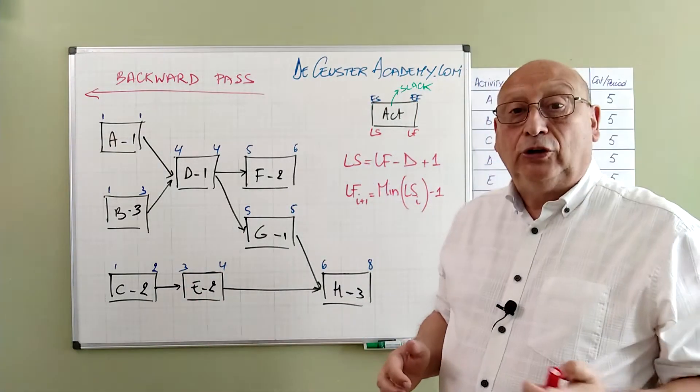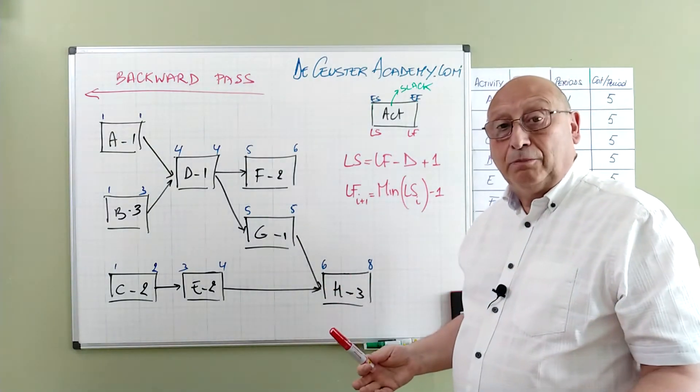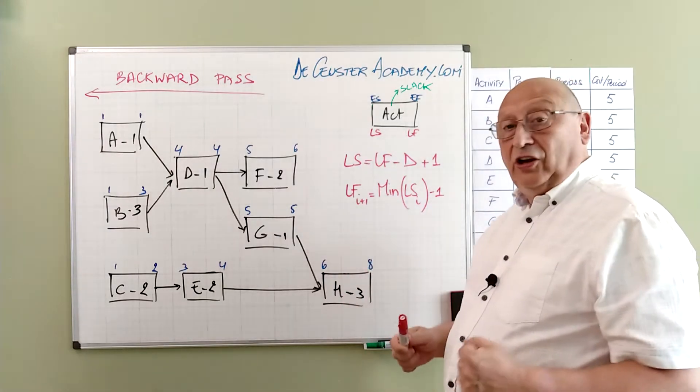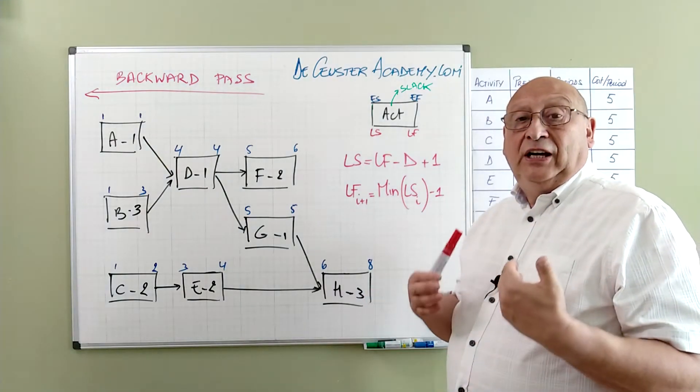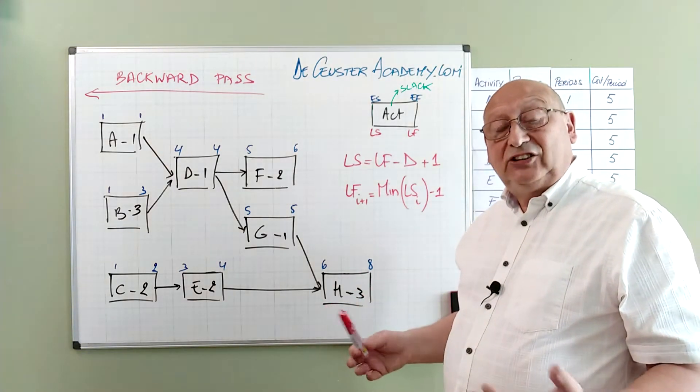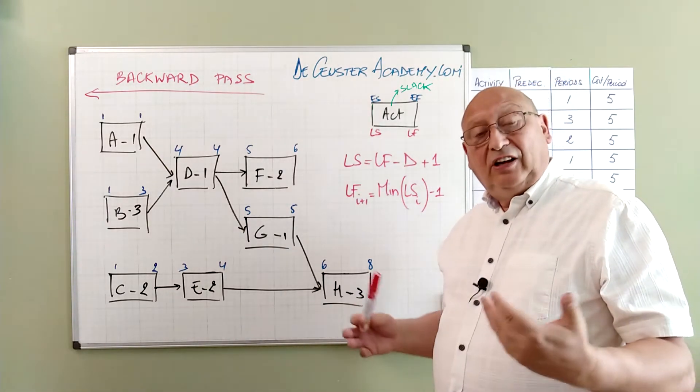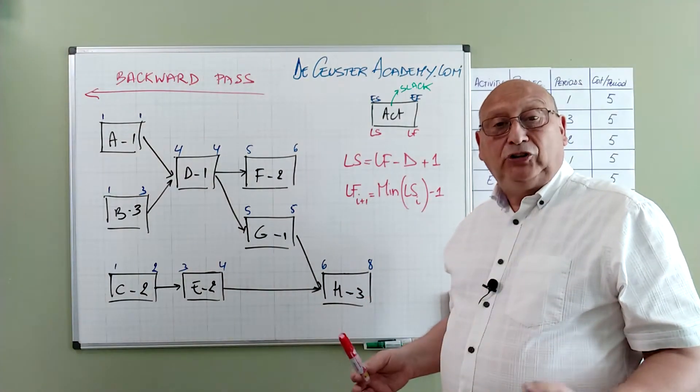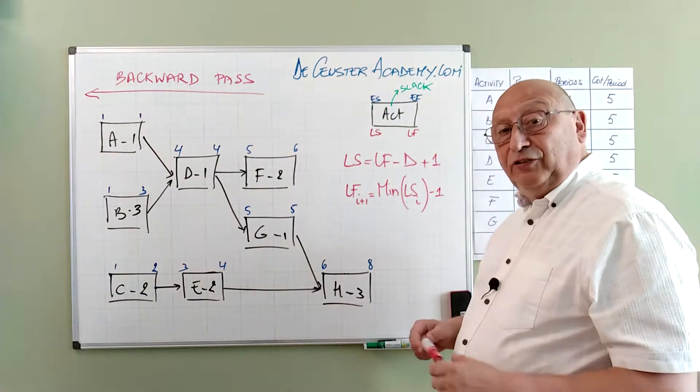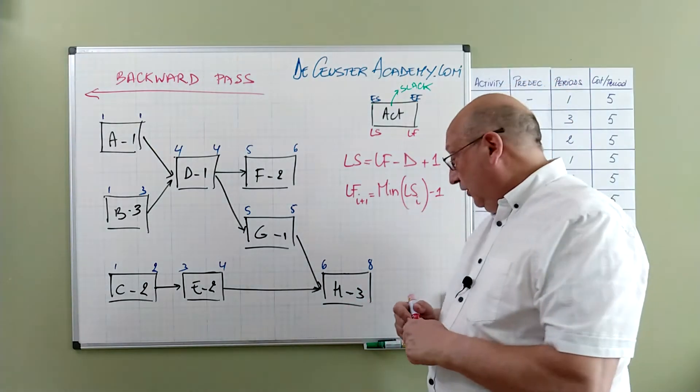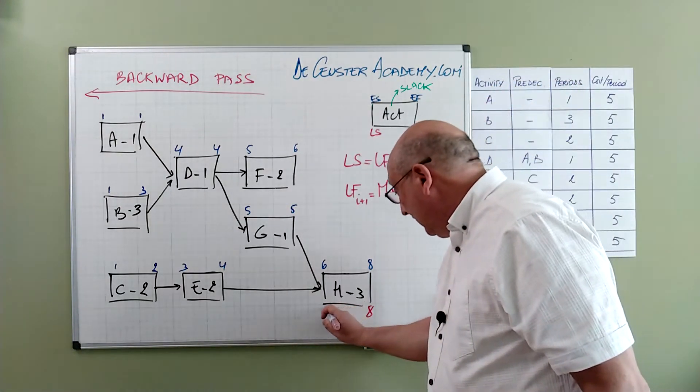Let's have a look at the formulas that we are going to use. The late start is the late finish minus the duration plus 1. And the late finish of the predecessor is the minimum value of the late start of all the successors minus 1. In our example we say that the late finish of the project is equal to 8. So basically early finish and late finish of the project are equal to each other. So we have 8. 8 minus 3 plus 1 is 6.